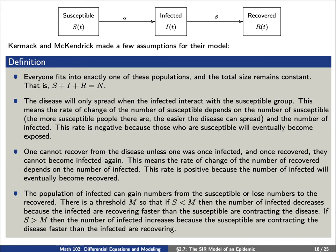And finally, the population of the infected can gain numbers from either the susceptible or lose numbers to the recovered. We're assuming that there is some threshold capital M such that if the number susceptible S is less than M, then the number of infected decreases because the number of infected are recovering faster than the number of susceptible are contracting the disease. Similarly, if S is greater than M, then the number of infected increases because the susceptible are contracting the disease faster than the infected are recovering.